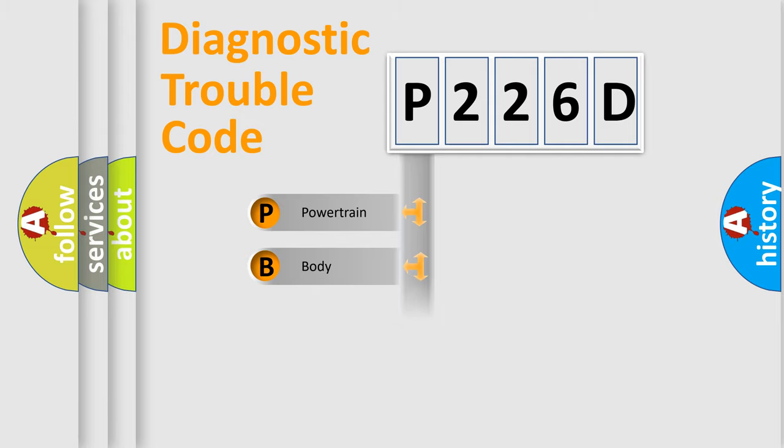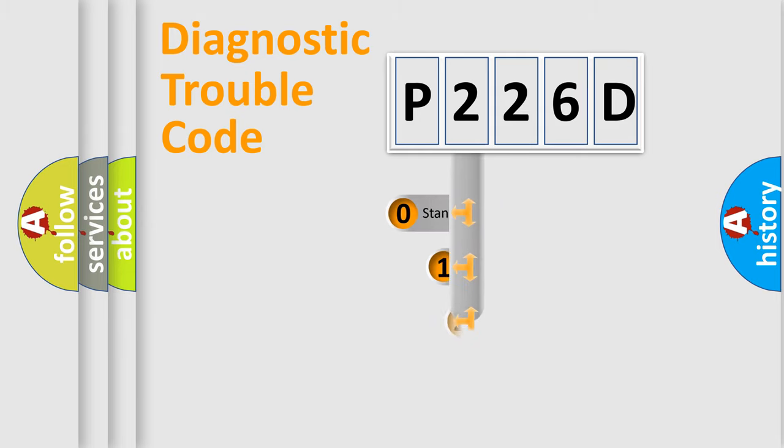Powertrain, Body, Chassis, Network. This distribution is defined in the first character code.